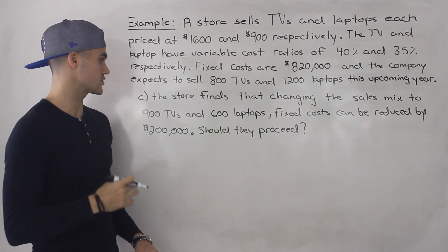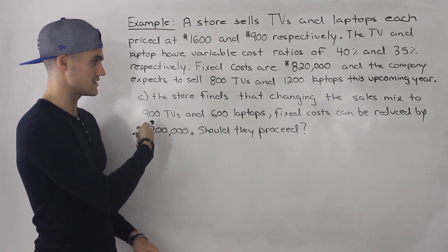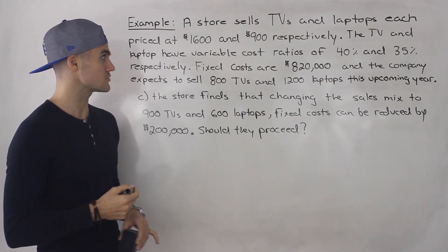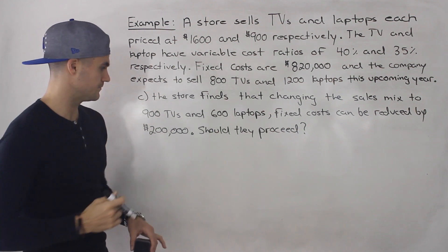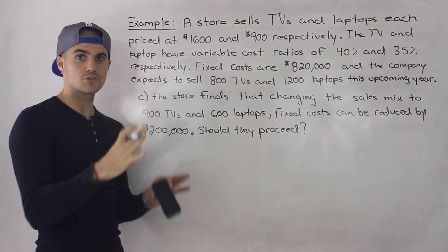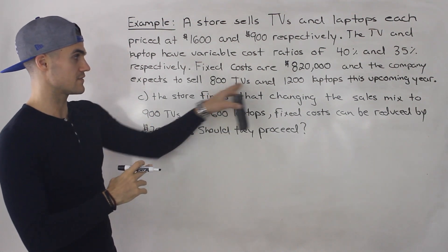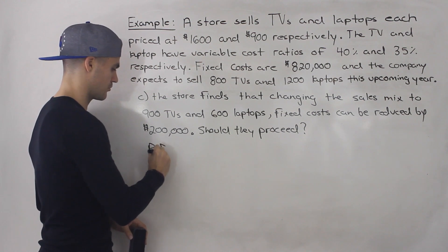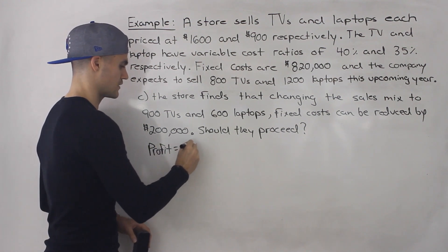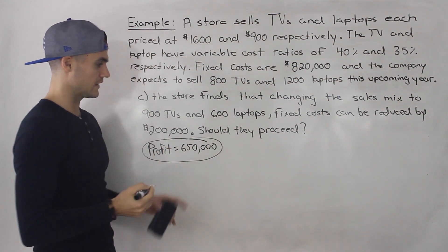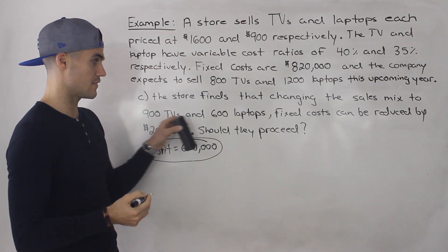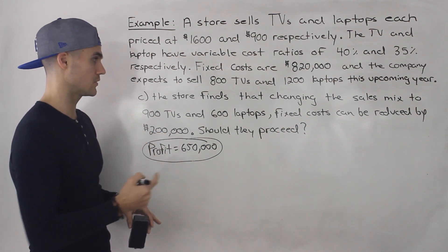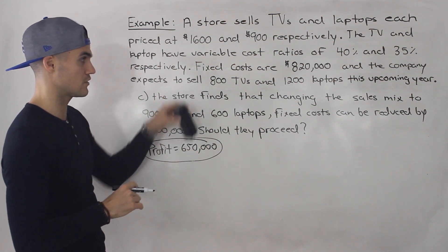Finally, Part C: the store finds that changing the sales mix to 900 TVs and 600 laptops allows fixed costs to be reduced by $200,000 — should they proceed? The way to answer this is to compare the contribution margin income statement from Part A with a new one using these numbers, then compare the profits. From Part A, the profit was $650,000. If the new sales mix yields a higher profit, proceed; if lower, keep the original.